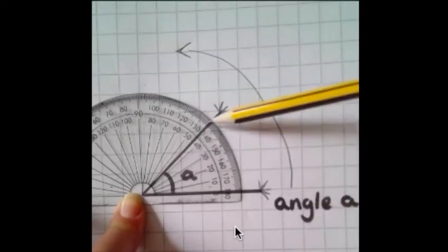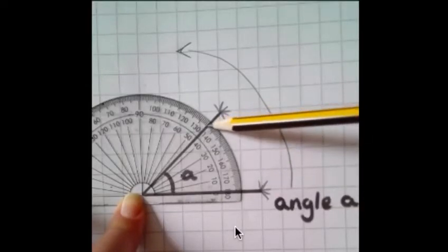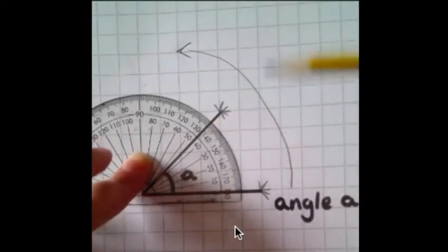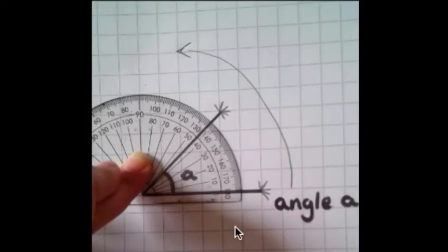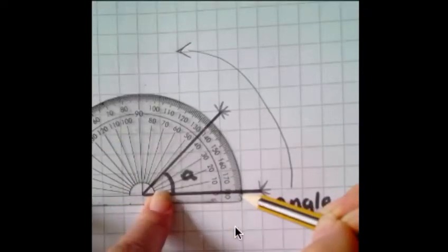Once you've done that, you've checked that the arm runs right through the scale. That's this here, runs right through the scale. You can see there that it does. You are ready to read the scale and record. You'll notice on your protractor that there is two scales. You've got a zero here and 180 here.